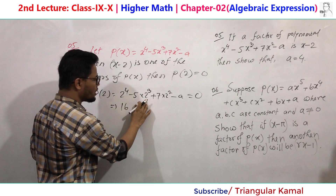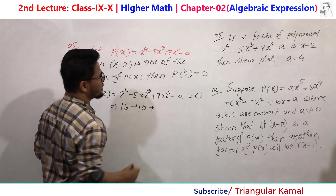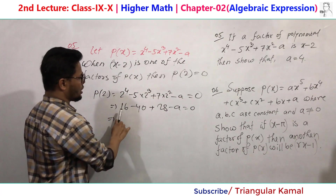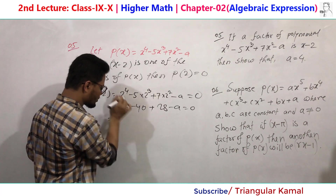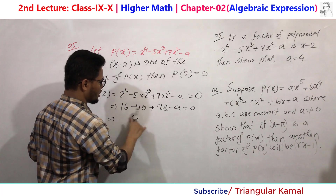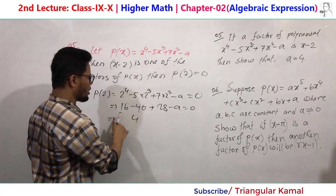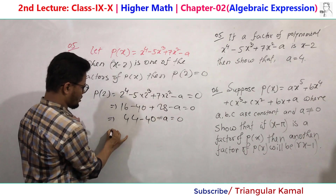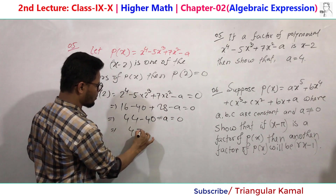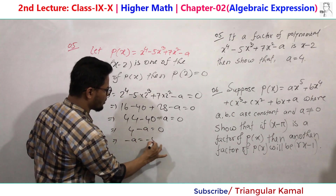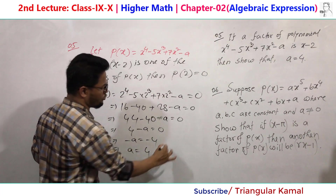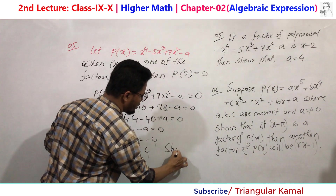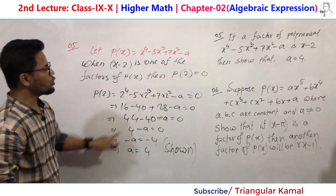Computing each term: 2 to the power 4 is 16, 5 times 2 cubed is 5 times 8 equals 40, and 7 times 2 squared is 7 times 4 equals 28. So we get 16 minus 40 plus 28 minus a equals 0, which simplifies to 44 minus 40 minus a equals 0, giving 4 minus a equals 0. Therefore minus a equals minus 4, and eliminating the minus signs from both sides we get a equals 4, which was the required result.